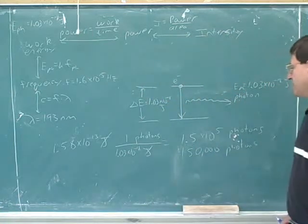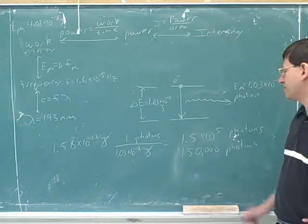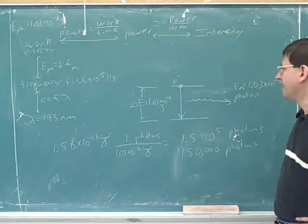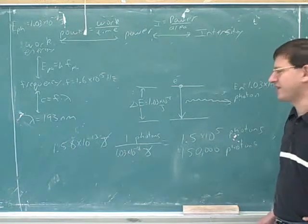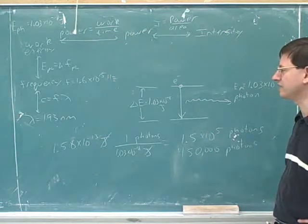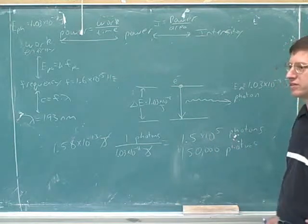So you can see how delicate the instruments have to be here to make sure you're not sending much more than 150,000 photons because usually, in the previous problem, the number of photons was like 10 to the 18th or something. So this is a pretty small number of photons. So this has to be a very precise and controlled laser over here.